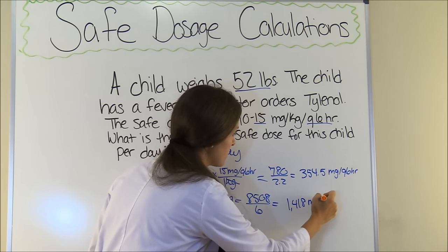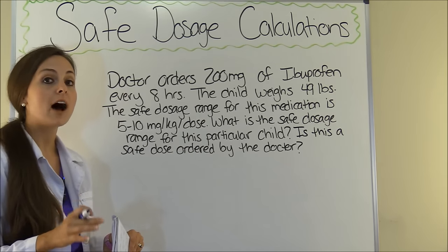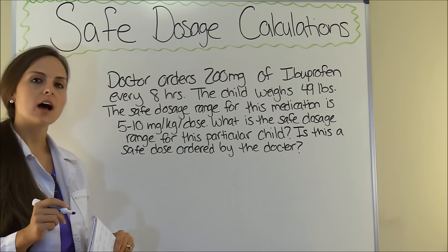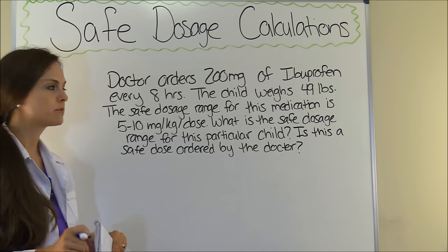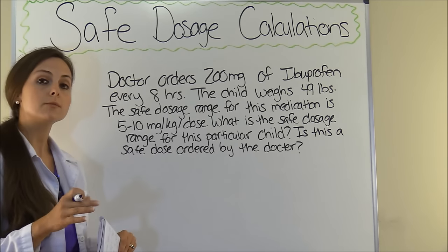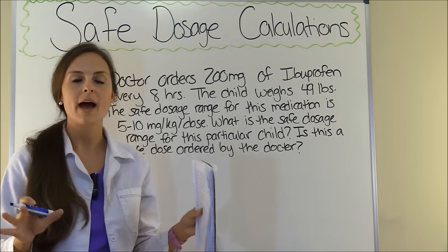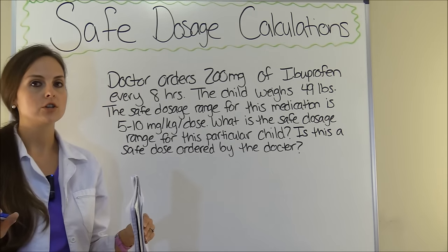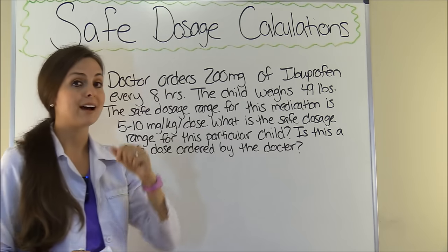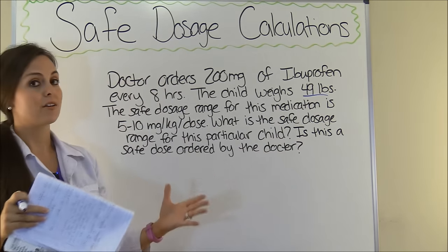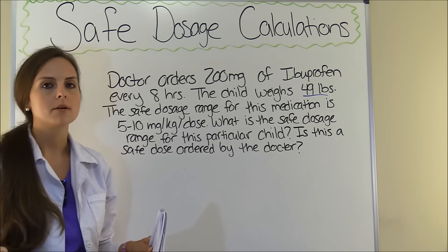Problem 3: doctor orders 200 milligrams of ibuprofen every eight hours. The child weighs 49 pounds. The safe dosage range for this medication is 5 to 10 milligrams per kilogram per dose. What is the safe dose range for this particular child, and is this a safe dose ordered by the doctor? We need to find the minimum and maximum dose based on the child's weight of 49 pounds, and see whether 200 milligrams falls within that range.